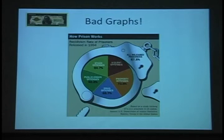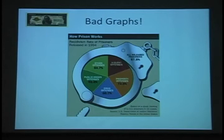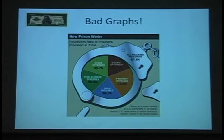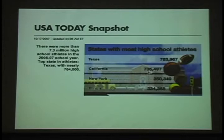Here's something I found in USA Today: States with the most high school athletes. Texas — 763,000. California — a bit fewer, 735,000. New York — 350,000, almost as many as Texas according to the graphic. Something's wrong. Once you start collecting these, you can have a ball because they're all over the place.